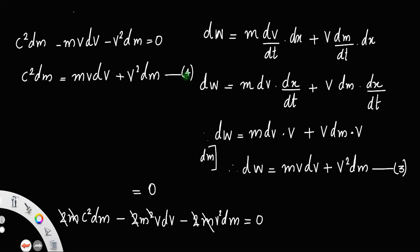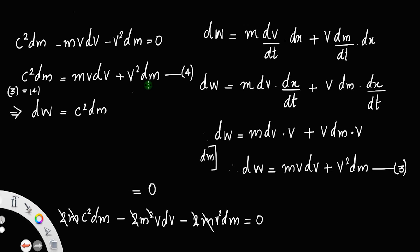Comparing this differentiated equation 4 with equation 3, you can see that both right-hand sides are equal — mv dv plus v² dm appears in both. This means dw equals c² dm. Call this equation number 5. So this is your final differential relation: dw equals c² dm.